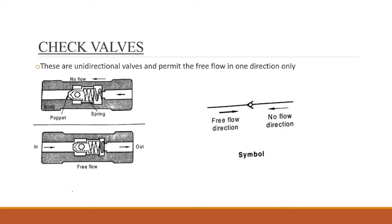There is a check valve in the direction control valve family. The main purpose of the check valve is unidirectional flow — it permits flow in one direction only. The check valve uses a poppet; the poppet seat is pressed in one direction, maintaining pressure to keep flow in that direction.